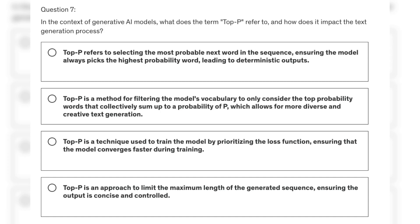Let's look at question 7. In the context of generative AI models, what does the term top P refer to and how does it impact the text generation process?